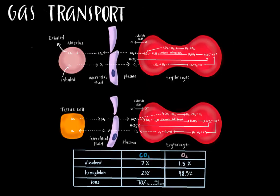Let's discuss the main methods of transport for oxygen and carbon dioxide. Oxygen is mainly transported by hemoglobin — 98.5% of oxygen is bound to hemoglobin in red blood cells, referred to as oxyhemoglobin. Only 1.5% of oxygen is dissolved in blood plasma. Carbon dioxide, on the other hand, is mainly transported in the form of bicarbonate ions. 70% of carbon dioxide exists as bicarbonate ions with associated H-plus ions bound to hemoglobin. 23% of carbon dioxide is bound to hemoglobin as carbaminohemoglobin, and 7% is dissolved in blood plasma.